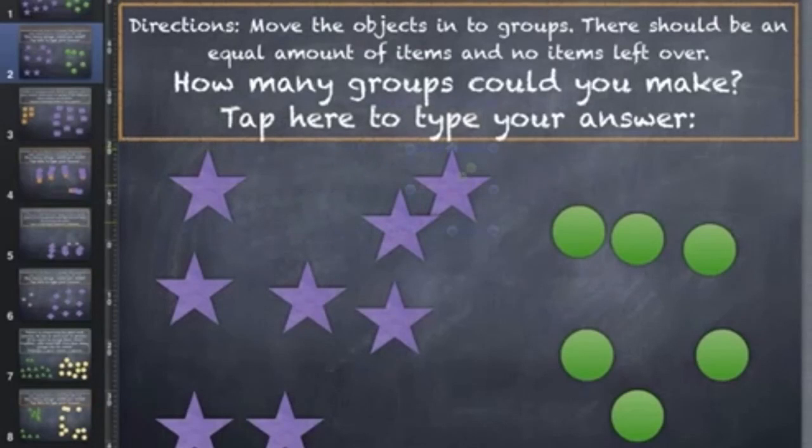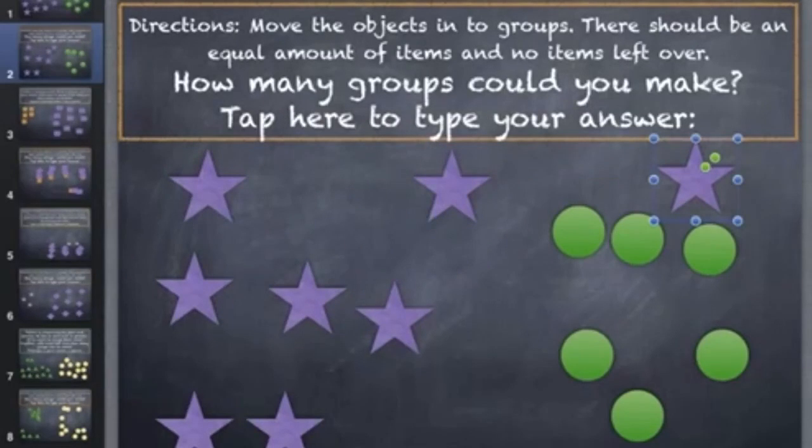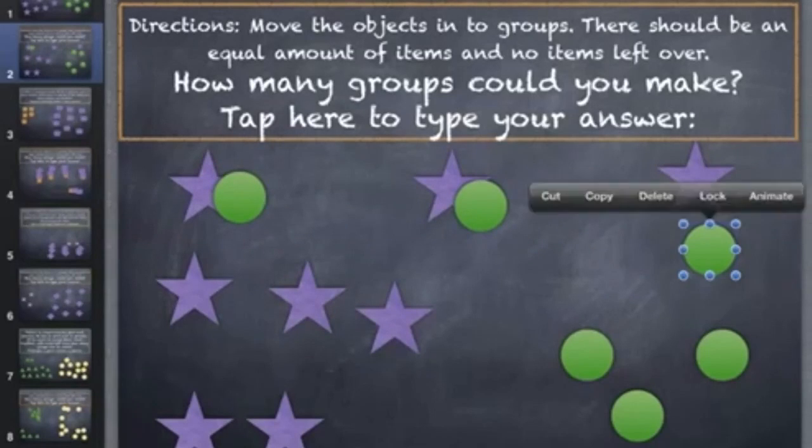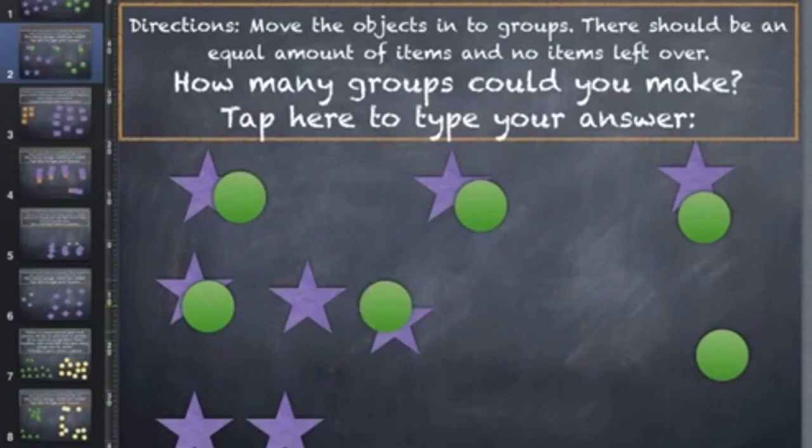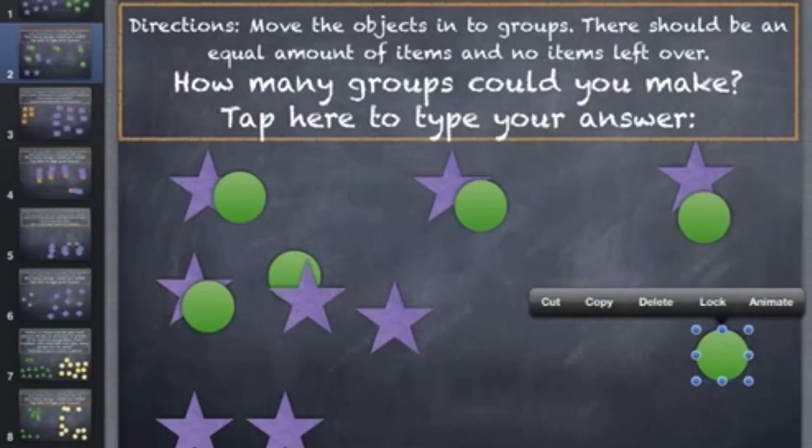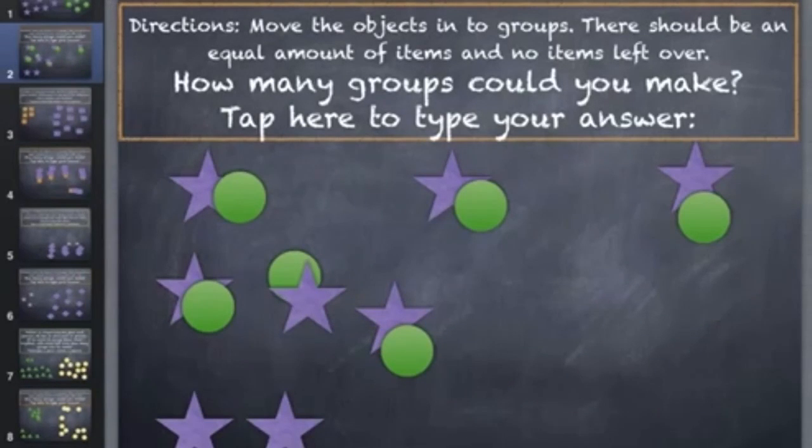We want to make groups where the number of candy and the number of apples are the same. So let's start with moving these around a little bit here. So far I've got one piece of candy and one apple together. Let's keep doing that. So I've made my groups, but as you can see, I have two stars or candy pieces left over. So I need to try again.